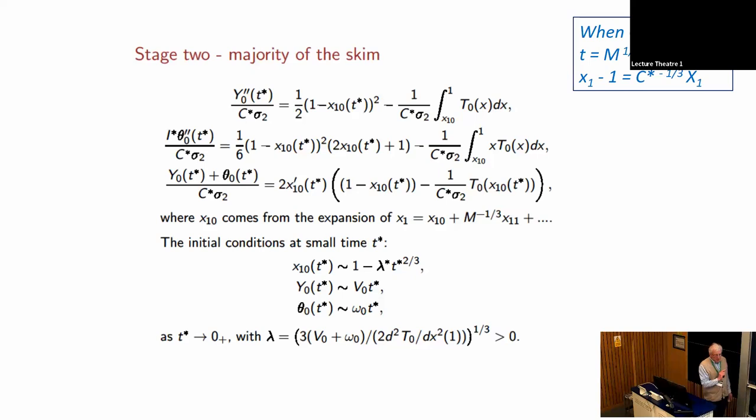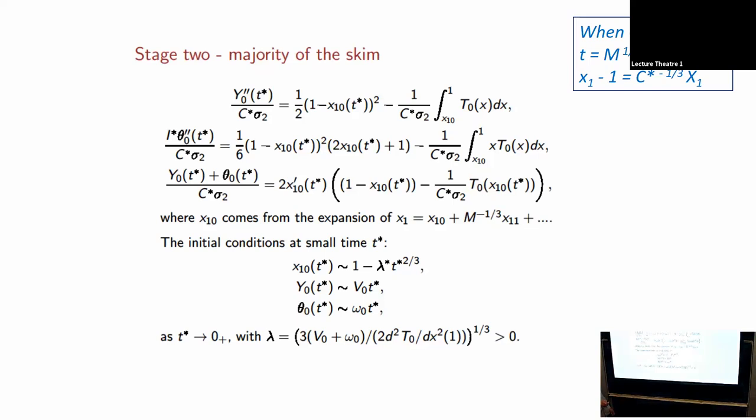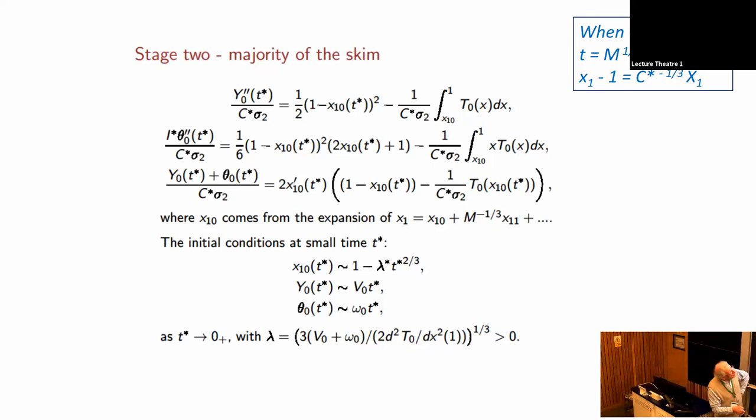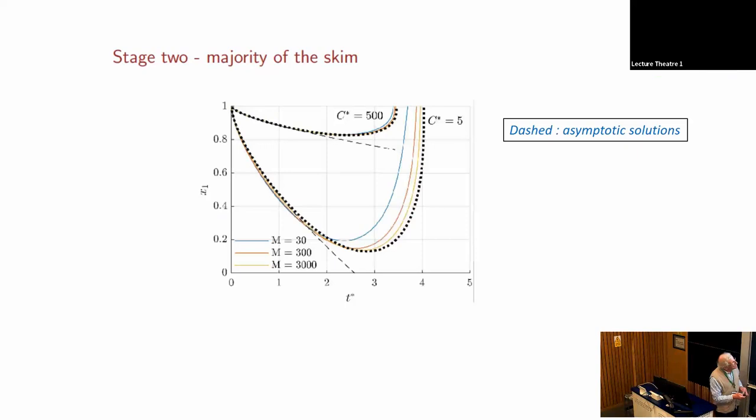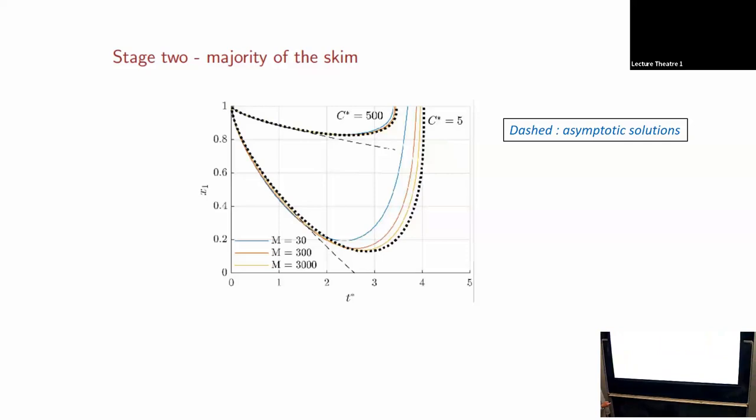You substitute that into the governing equations and come up with a system of three coupled equations for Y0, theta0, and X10, which is essentially X1. These three equations are coupled together as a nonlinear system of integral differential equations. Starting conditions are what we had before: T to the two thirds with time scaled with M to one third. X1 minus one, the wetted region, is of order one because C star is order one. We're wetting perhaps half or even three quarters of the body in this range.